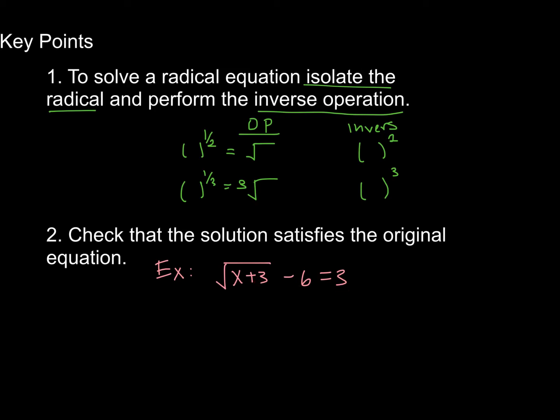So to follow through here, I want to isolate my radical so that I can then perform the inverse operation to both sides. In other words, squaring, since this is square rooting. So first I need to add 6 to both sides, and that will leave me with x plus 3. The square root of x plus 3 is equal to 9.